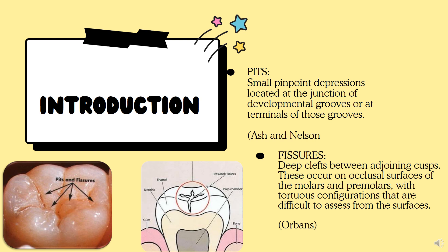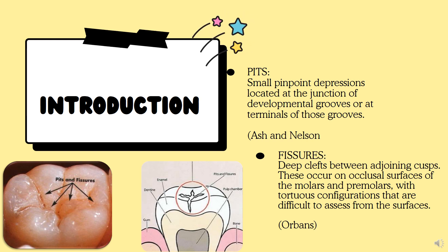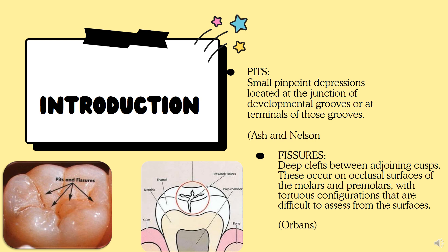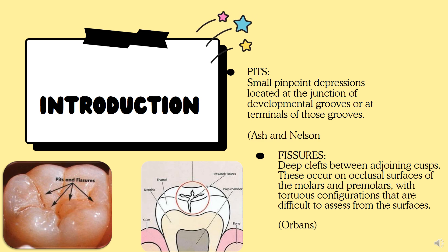Moving on to fissures: fissures are nothing but deep clefts between adjoining cusps. This occurs on the occlusal surface of the molars and premolars, with configurations that are difficult to access from the surface. This definition was given by Orban's. So remember — pit definition: Ash and Nelson; fissure definition: Orban.